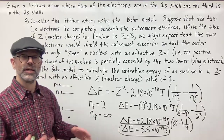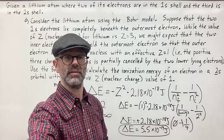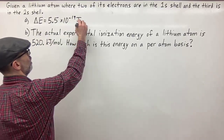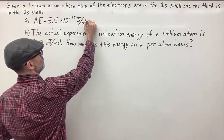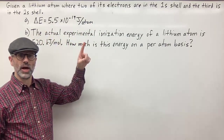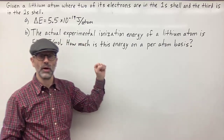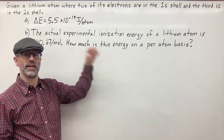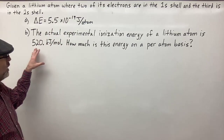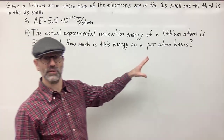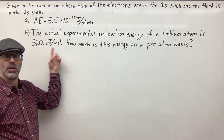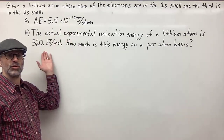So this is part A. Let's go ahead and do part B. This result is in joules per atom — that's the energy required to remove one electron from the 2s sublevel, the outermost electron, from one lithium atom. In part B, they're giving us the actual experimental ionization energy of lithium as 520 kilojoules per mole, and they want us to convert this into joules per atom.